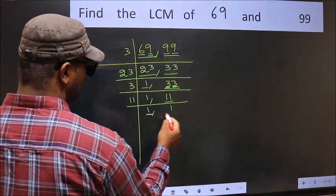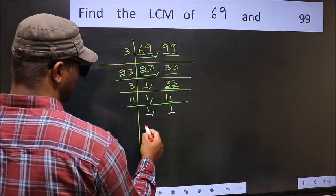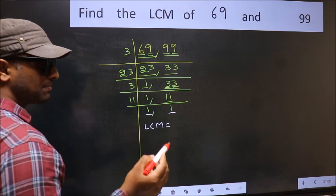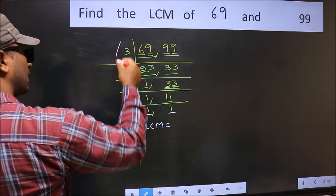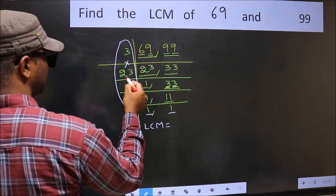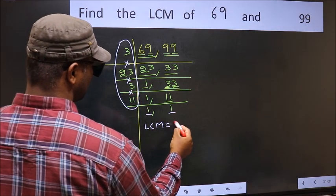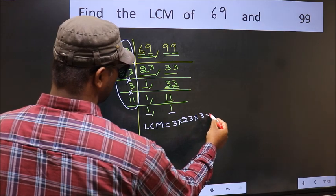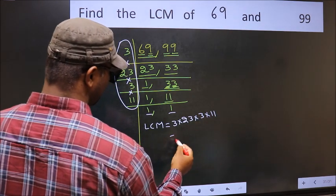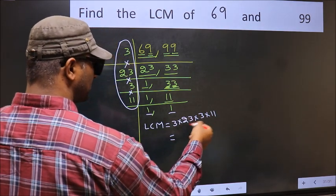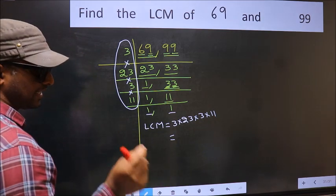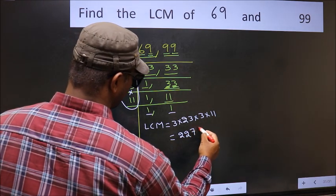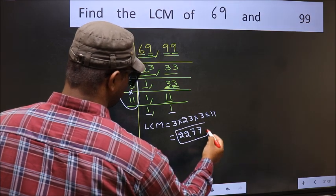So we got 1 in both the places. So our LCM is, LCM is the product of these numbers. That is 3 into 23 into 3 into 11. When we multiply these numbers, we get 2277 is our LCM.